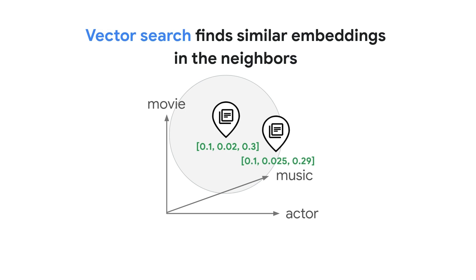Semantic search is so powerful. For example, if you search for 'movie', a vector search can also find relevant texts with 'film' and 'cinema' because the embedding model understands they have similar meanings. This leads to improved search quality.